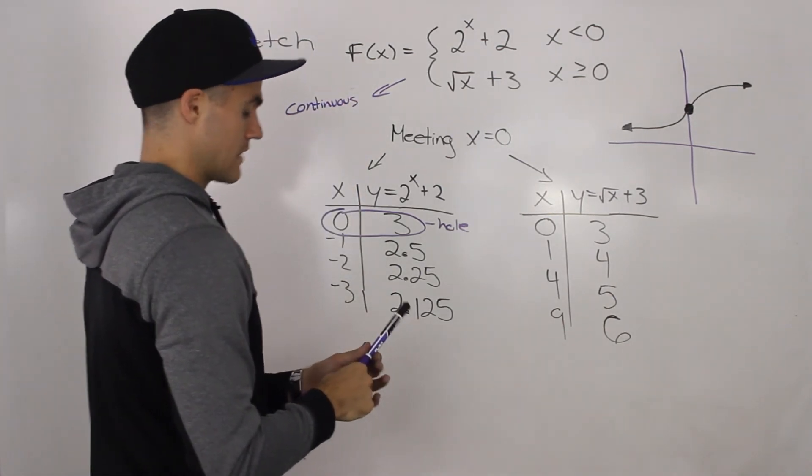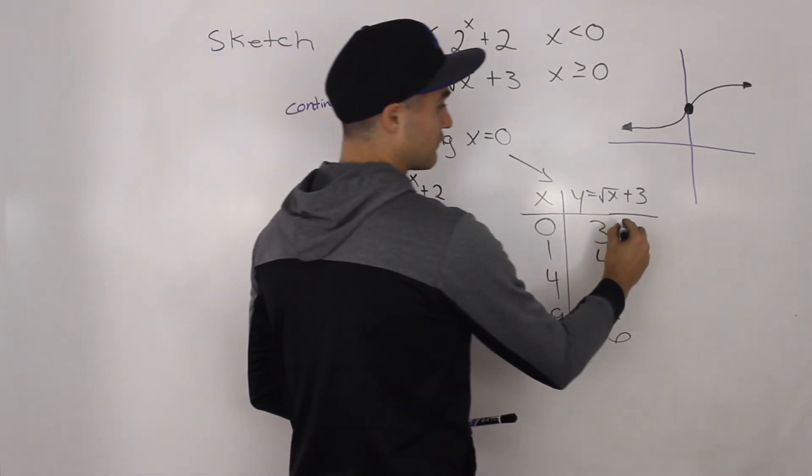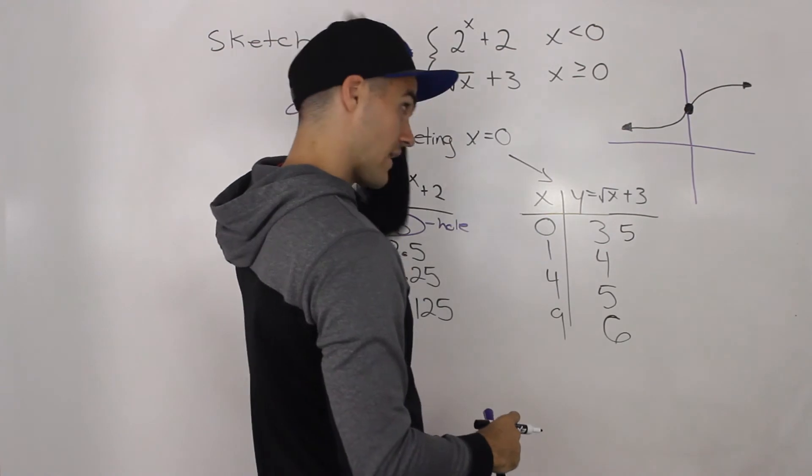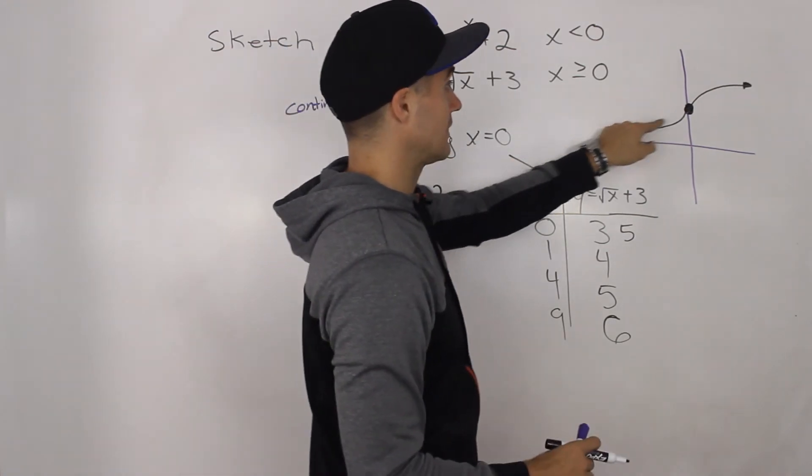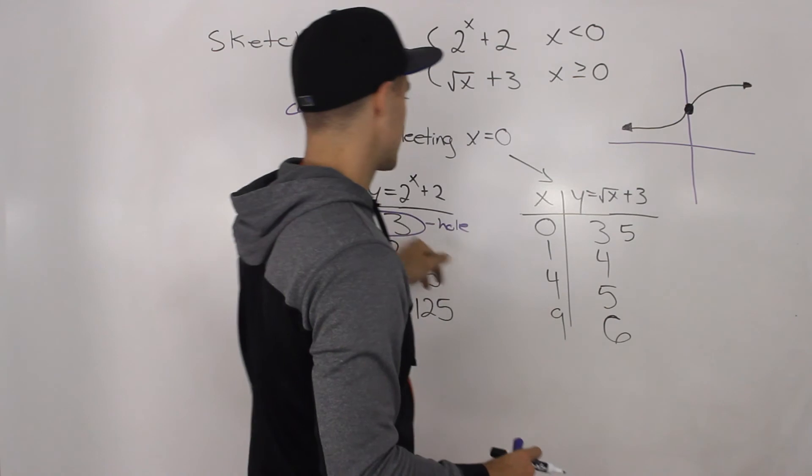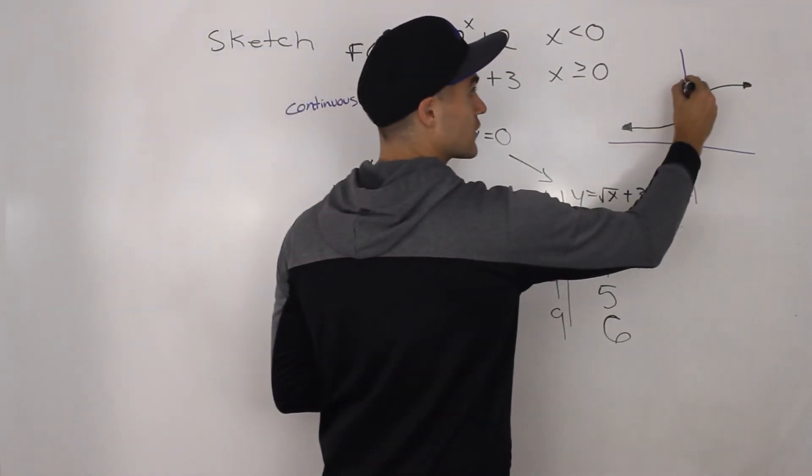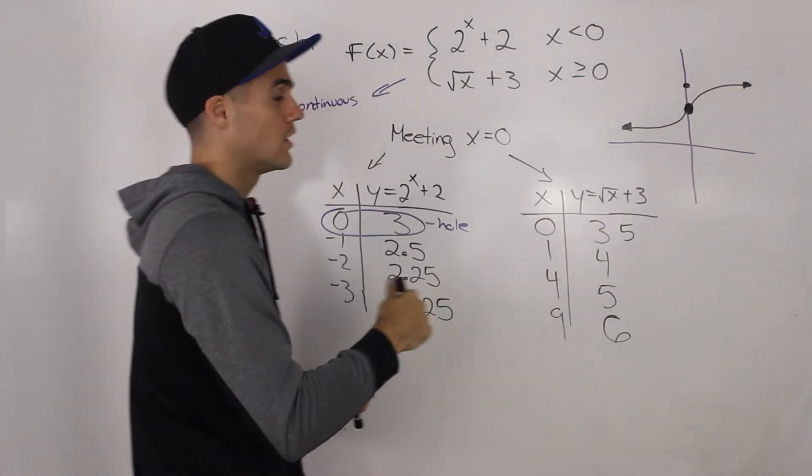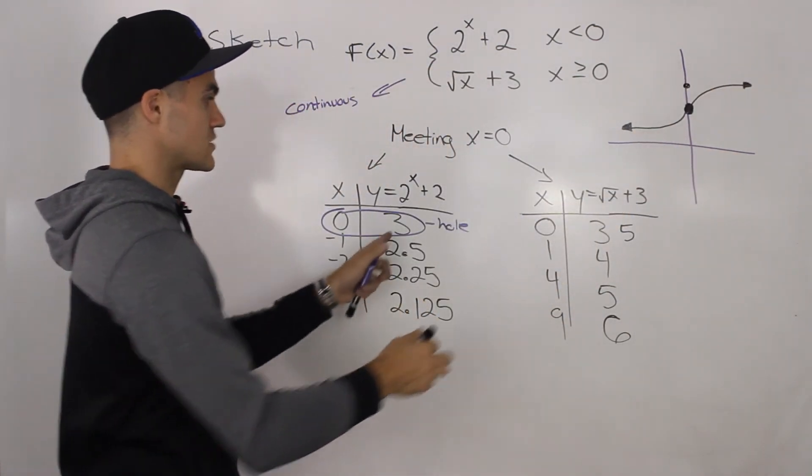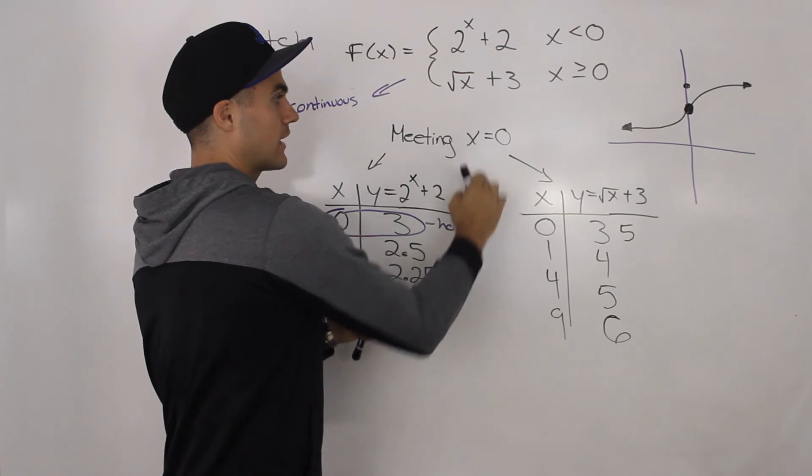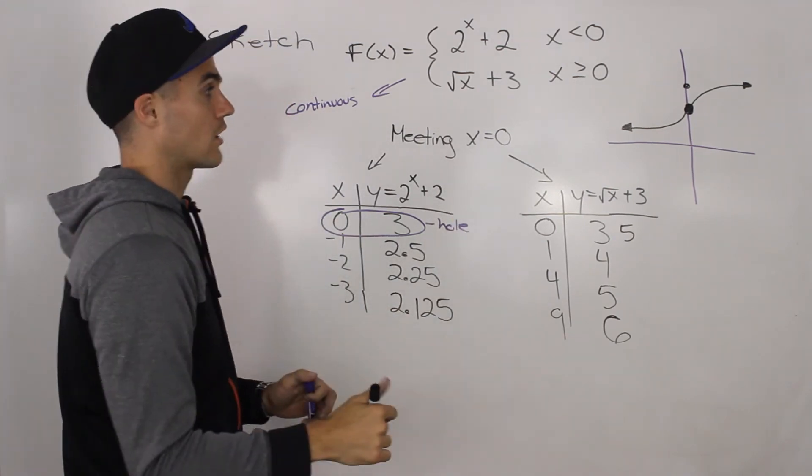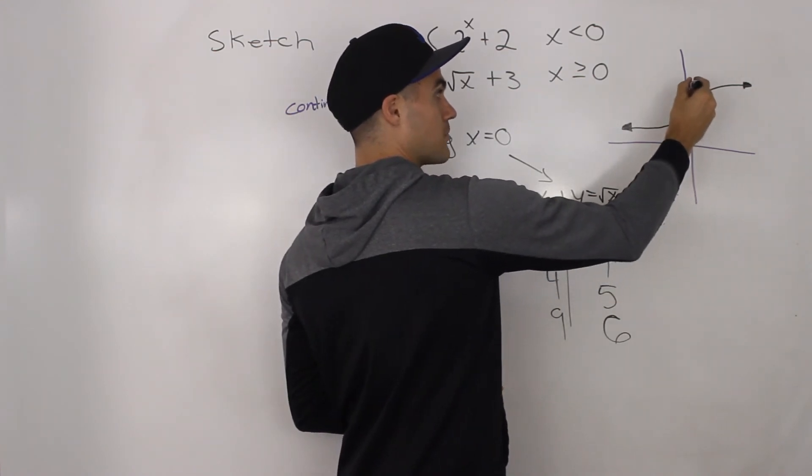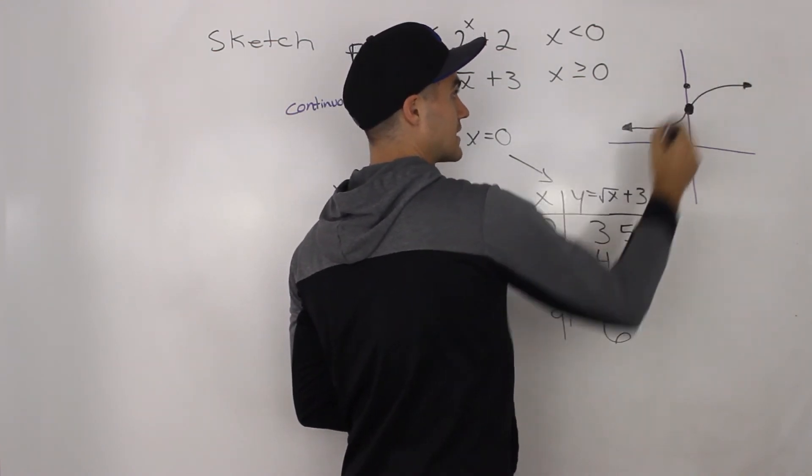Now, let's say that this coordinate was zero and five, for example, instead of three. Well, then what would happen would that left leg would still have a hole at zero and three, and then this new function would start at zero and five, and then go up like that. And then the function would be discontinuous, because those y values at that meeting point x is equal to zero are different. We would have to take our pen off the paper to get to the other leg.